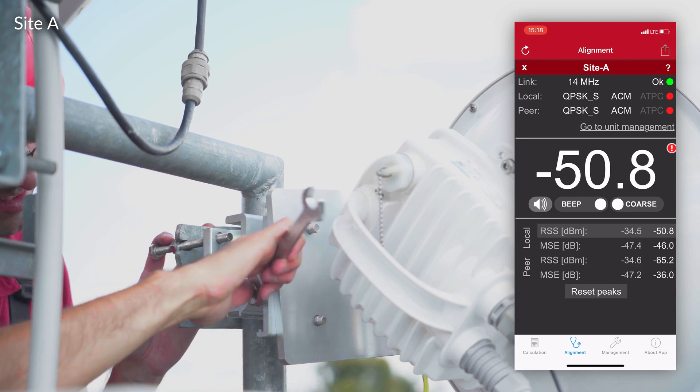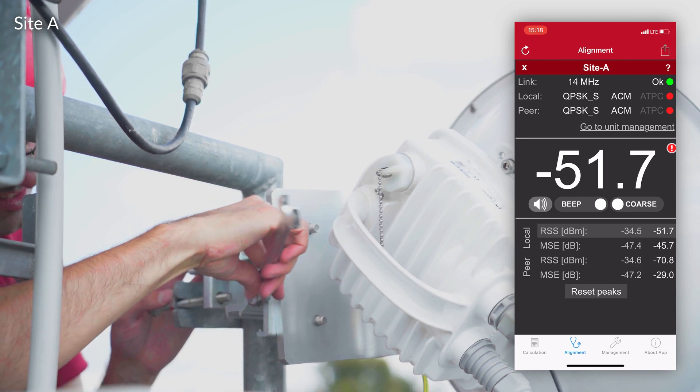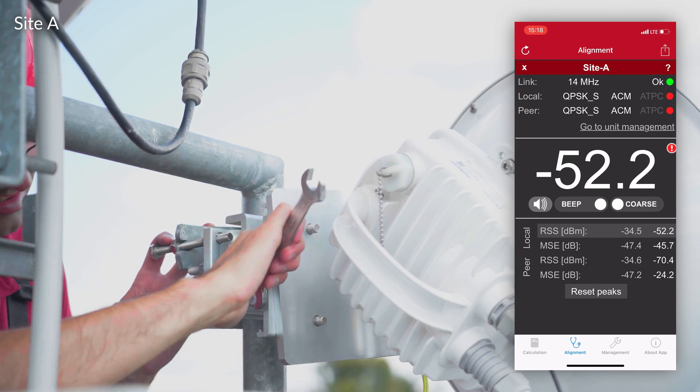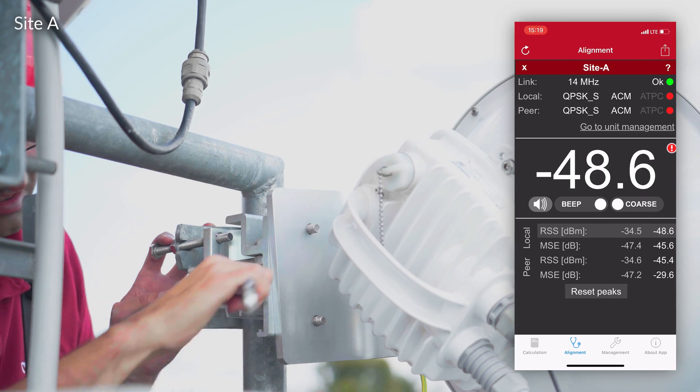When a link is connected, Ray Tools automatically start showing data from both sides. We will now hand over to Jiří on the other side to align his antenna.